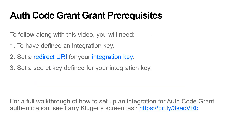To follow along with this video and get an access token, you will need to have these things first: an integration key, a redirect URI for your integration key, and a secret key defined for your integration key. For a full walkthrough of how to set up an integration for AuthCodeGrant authentication, see Larry Kluger's screencast linked in this slide.